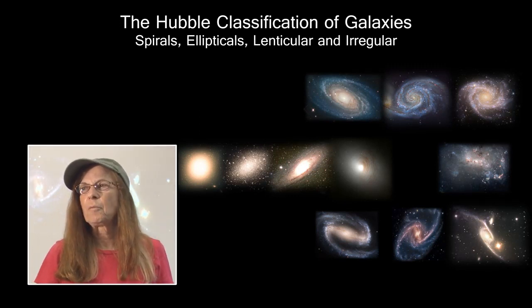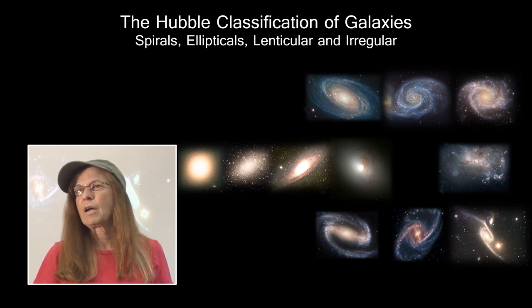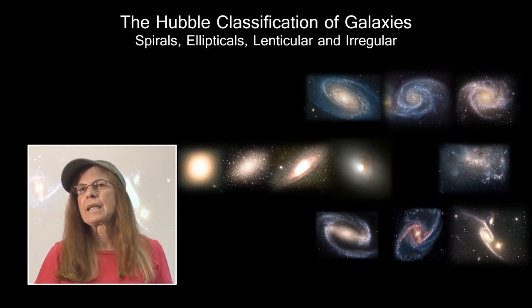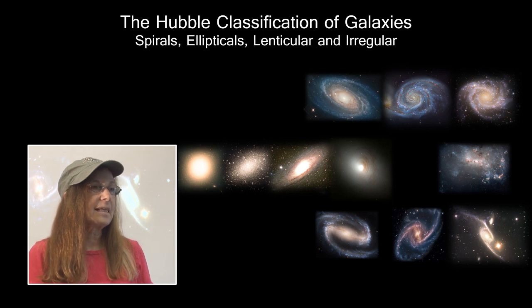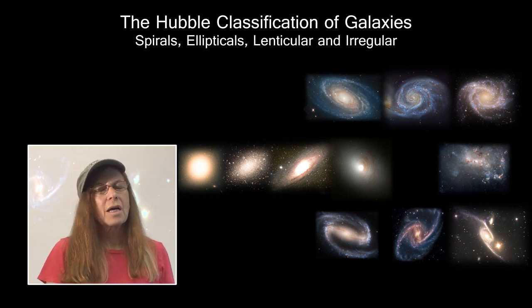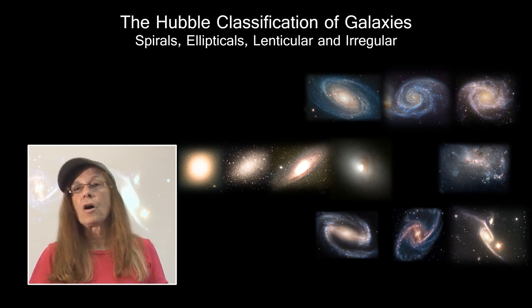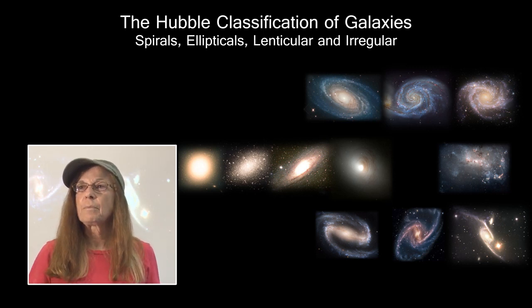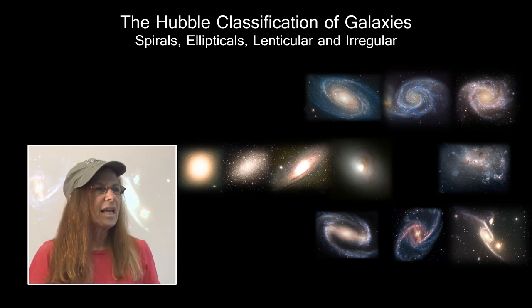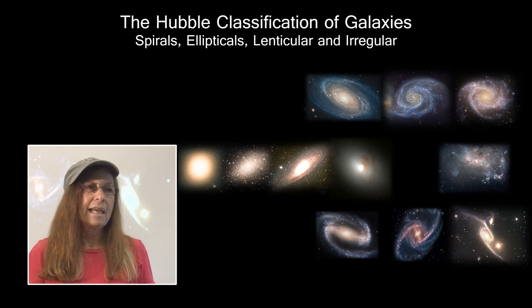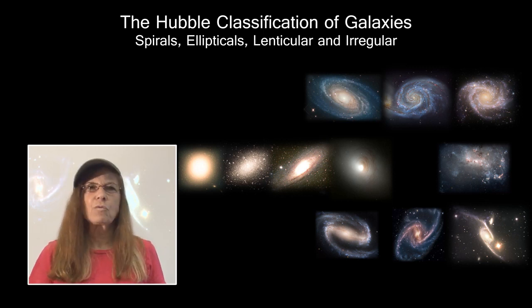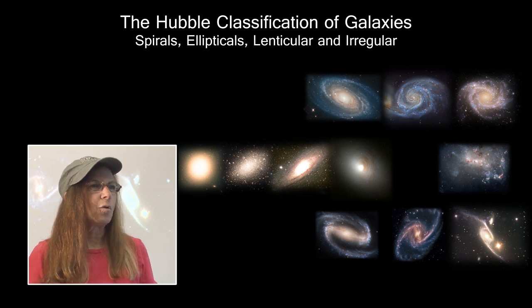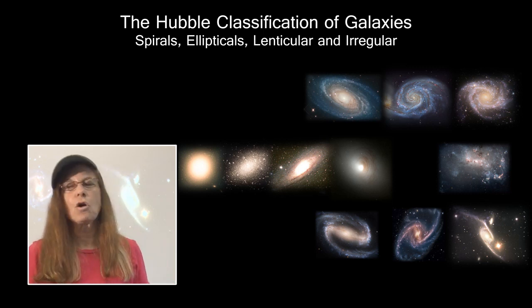The Hubble classification of galaxies will be covered later. However, there is no true evolutionary pathway for galaxies. When Hubble first created his tuning fork diagram of galaxies by morphology, it was thought galaxies evolved from one shape to another. We now know that is not true. Galaxies change shape through interactions with each other — collisions, near-misses, gravitational associations — but there is no sequential evolutionary pathway.